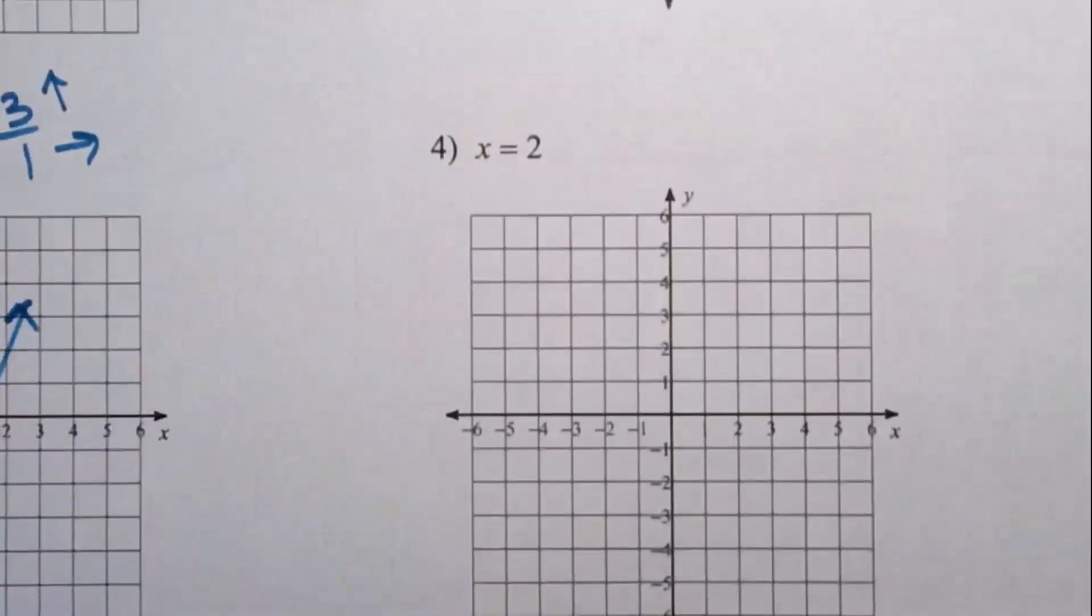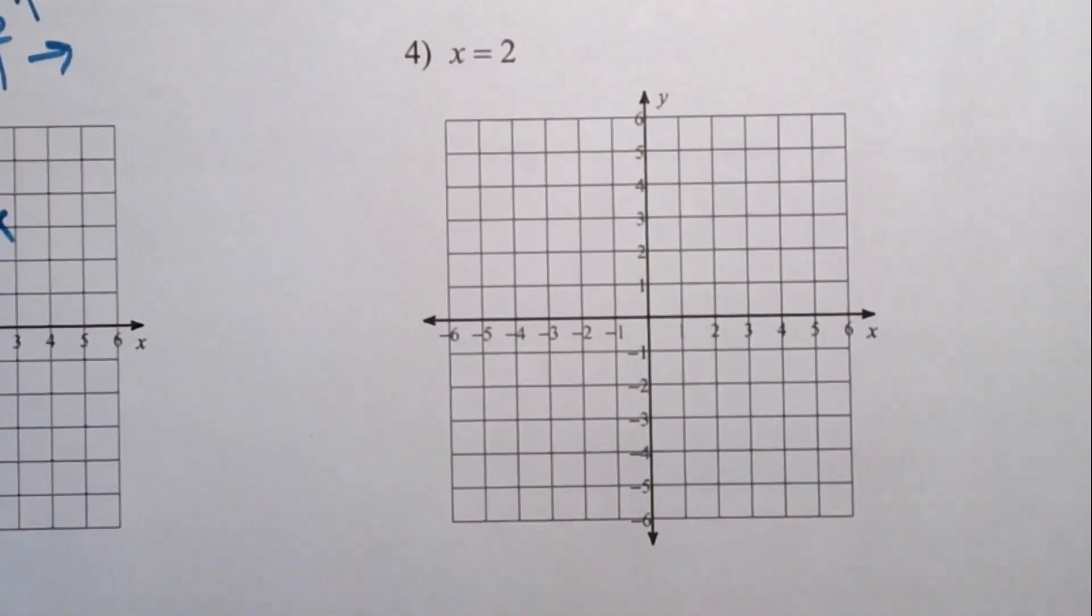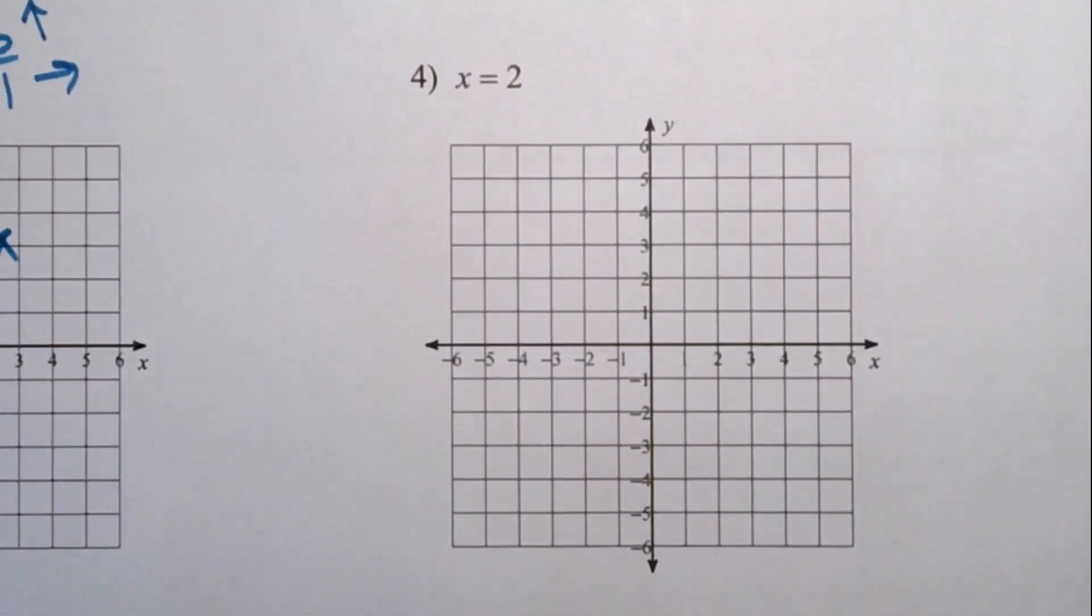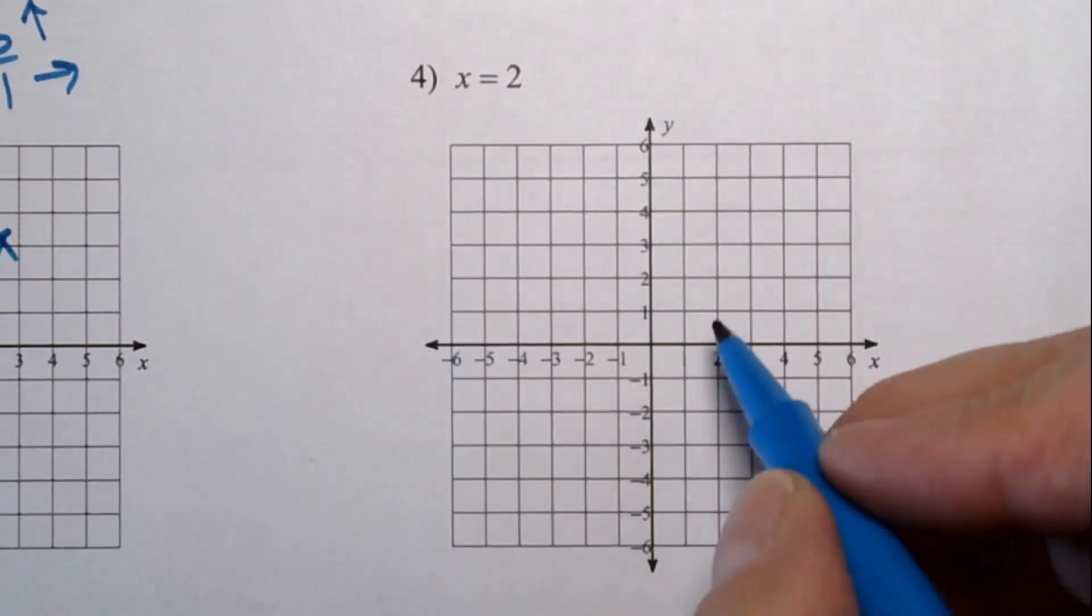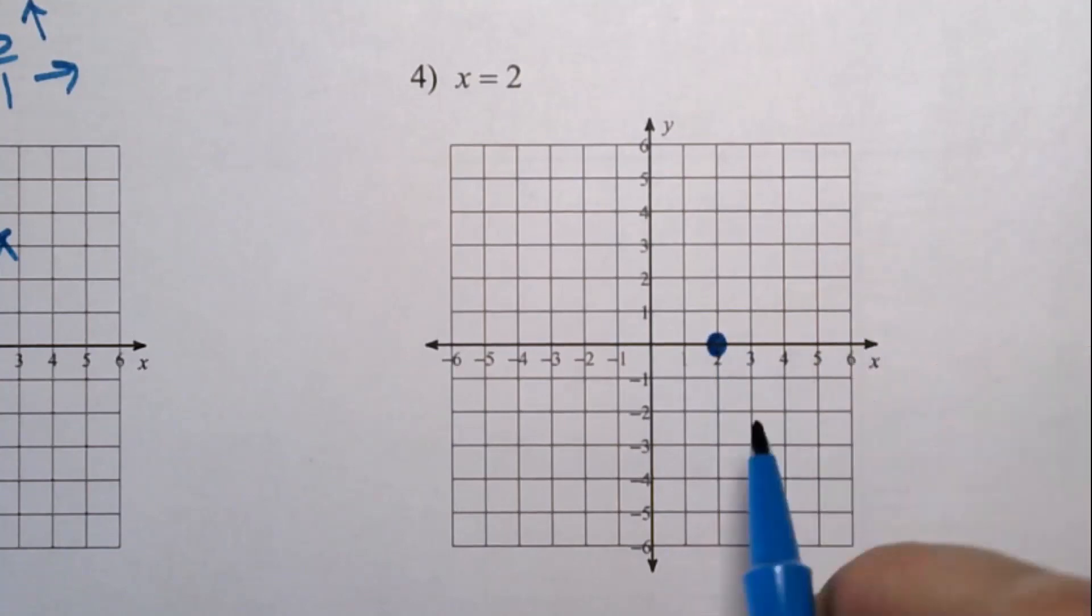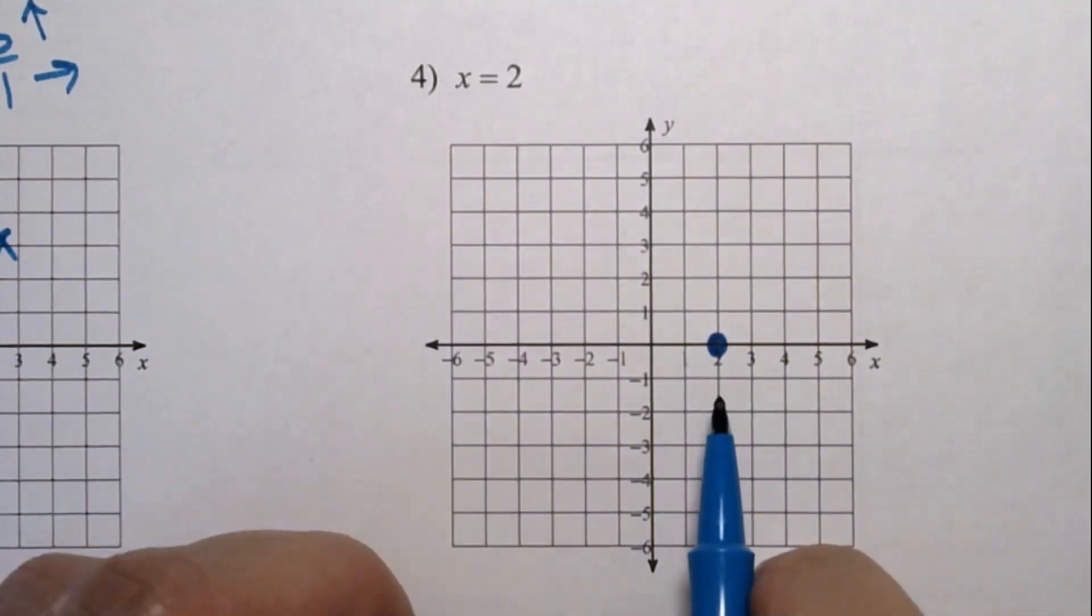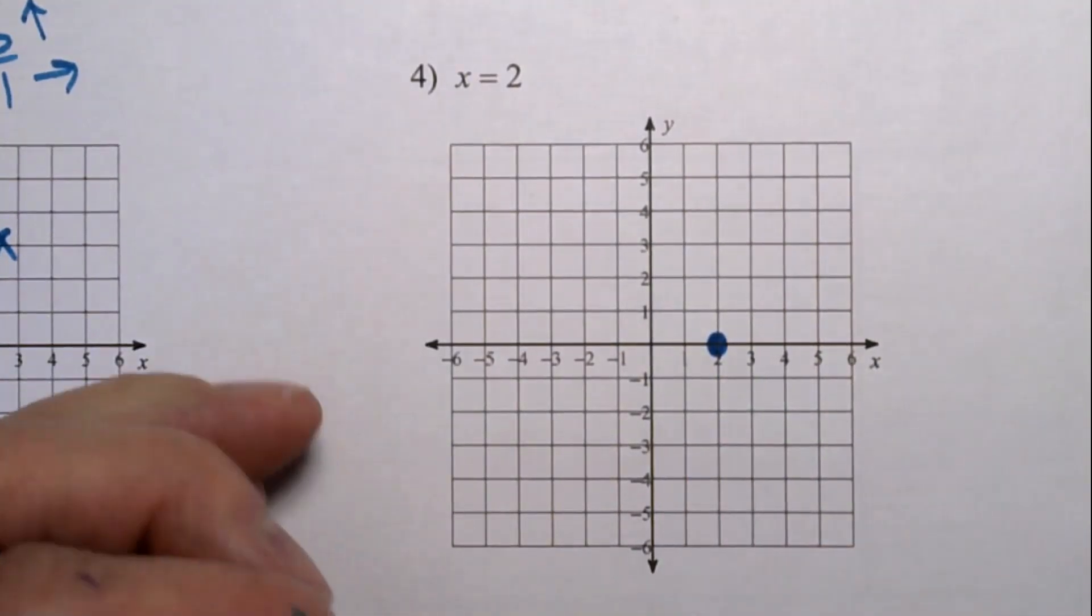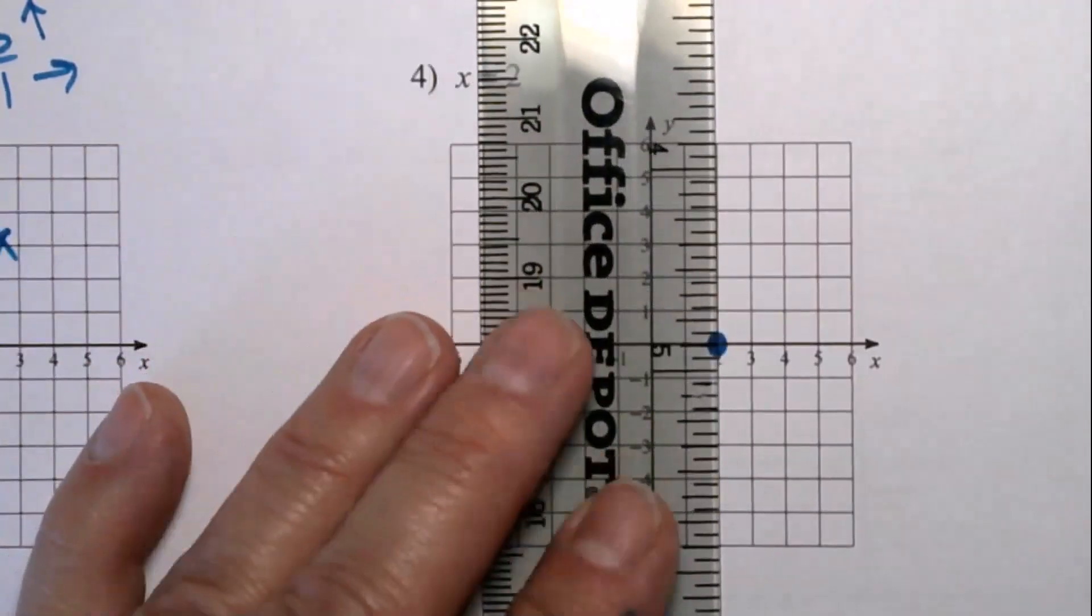Number four. All right. This is another one of those horizontal or vertical lines. It doesn't look like a regular equation to graph, but it does say x equals two, which means it's going to go through the x-intercept of two. Well, a straight line that goes through that is going to be a vertical line going straight up and down.